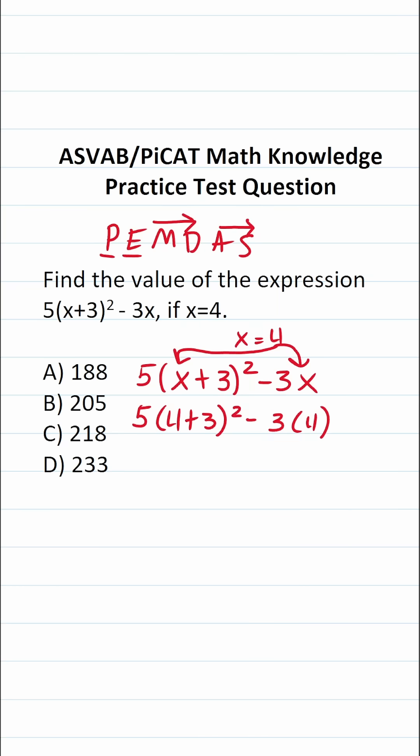So let's look through our expression. Do we have anything in parentheses? We do. We have 4 plus 3. So we're going to take care of that first. This becomes 5 times 4 plus 3 is 7 squared minus 3 times 4. All right we took care of our parentheses.